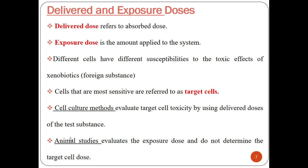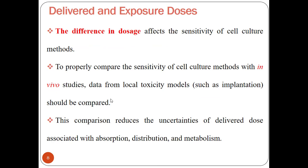Animal studies evaluate the exposure dose and do not determine the target cell dose. In the cell culture method, we have evaluation of the delivered dose, whereas in animal studies, we have evaluation of the exposure dose. The difference in dosage is a key factor in the sensitivity of cell culture methods. There must be a comparison between cell culture methods and in vivo studies. To properly compare sensitivity, data from local toxicity models such as implantation should be compared, as this reduces uncertainties of the delivered dose.